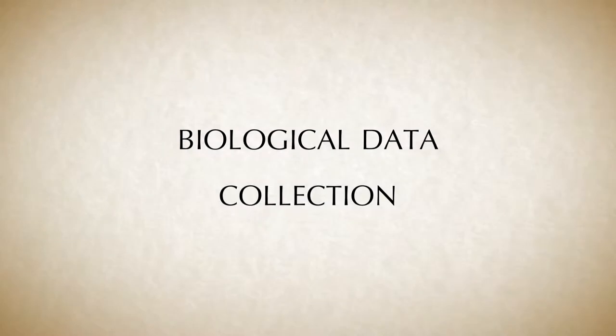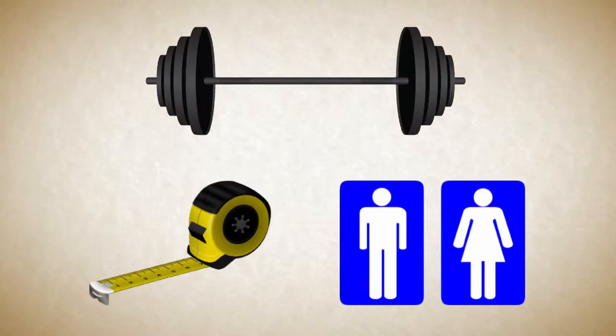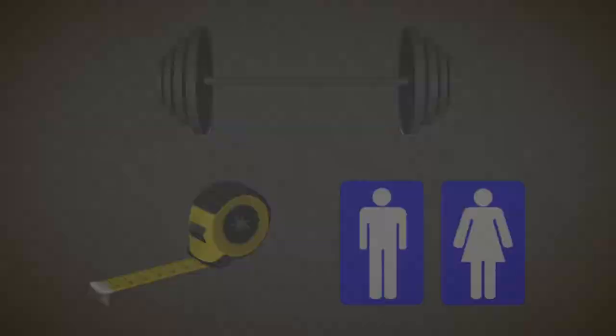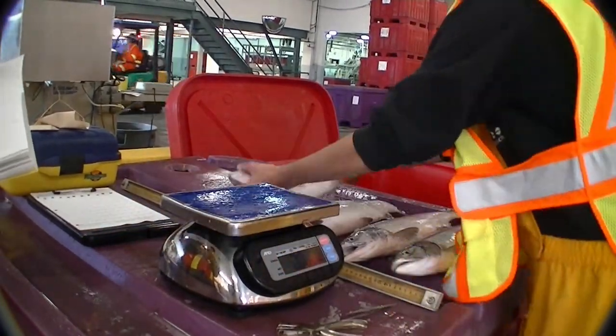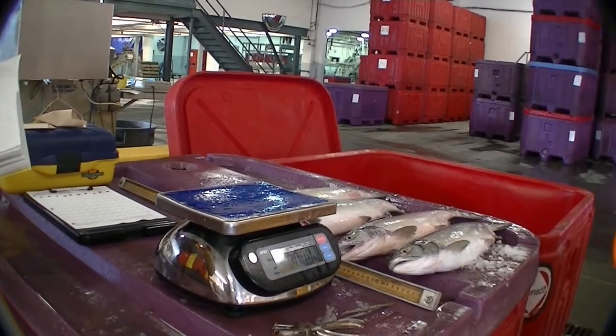Now we'll go into more detailed instructions on the components of a biological sample, starting with the weight, length, and sex. To record weight, simply place the fish on a scale in a stable position, then record the weight in pounds or kilograms to an accuracy of one decimal place.